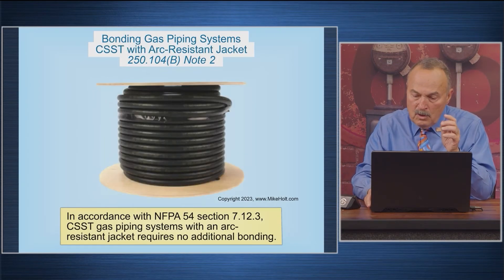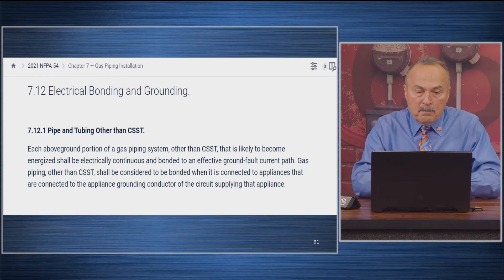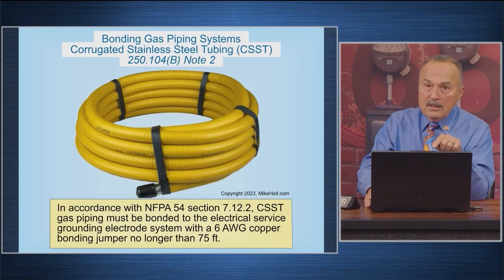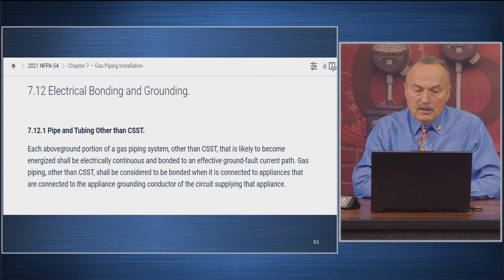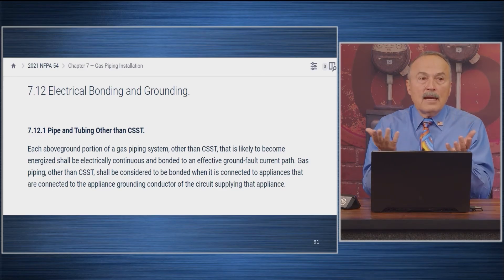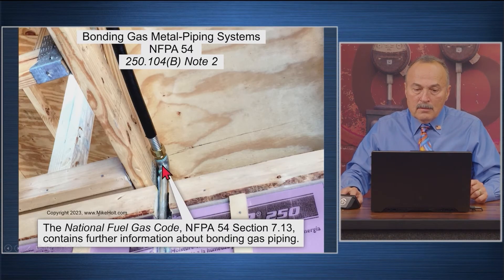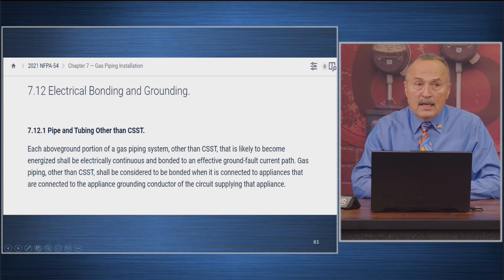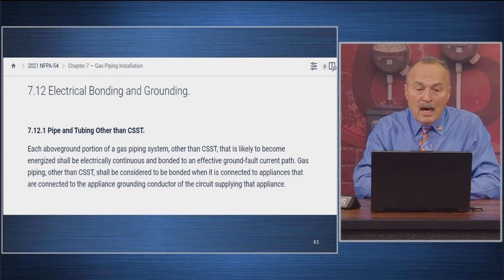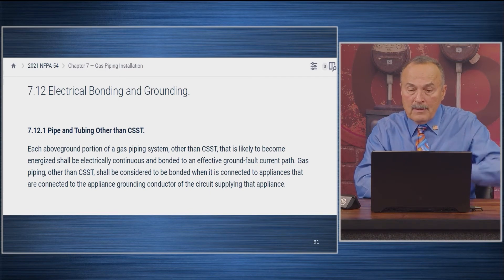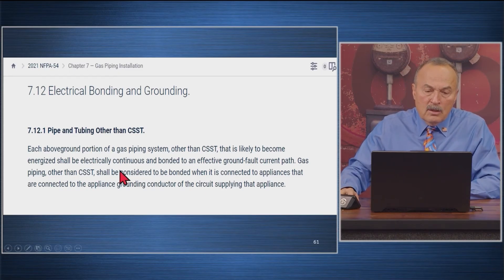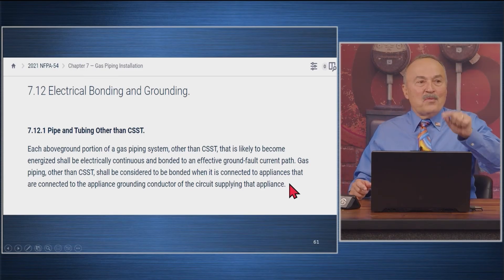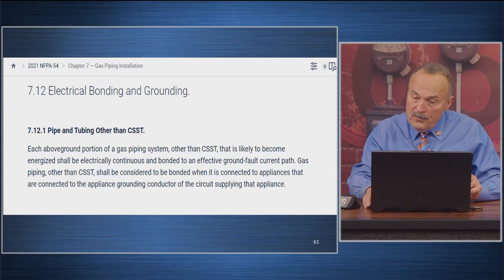NFPA 54 7.12.1 states: above-ground portions of gas piping systems other than corrugated stainless steel — such as black iron — that are likely to become energized, such as connected to a dryer or range, shall be electrically continuous and bonded to an effective ground-fault current path. Gas piping other than corrugated stainless steel shall be considered bonded when connected to appliances that are connected to the appliance equipment grounding conductor of the circuit — exactly what the NEC says.